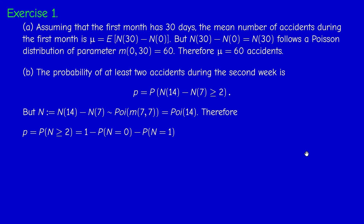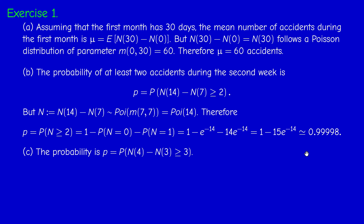We write the event N ≥ 2 as the complement of N < 2. Since N takes only integer values, the complement of N ≥ 2 is N equals 0 or 1. So P(N=0) = 14⁰/0! × e^(−14) and P(N=1) = 14¹/1! × e^(−14). Since e^(−14) is a very small number, we get a high probability of approximately 0.9999.